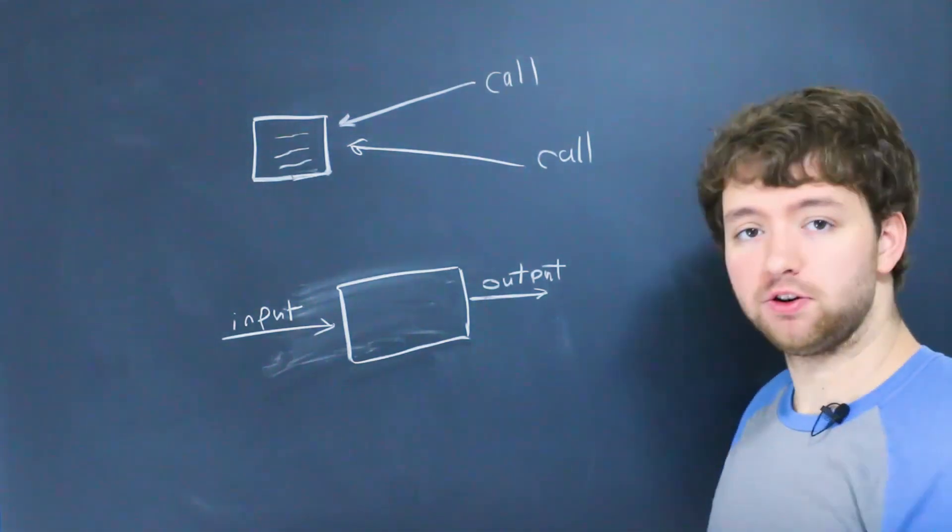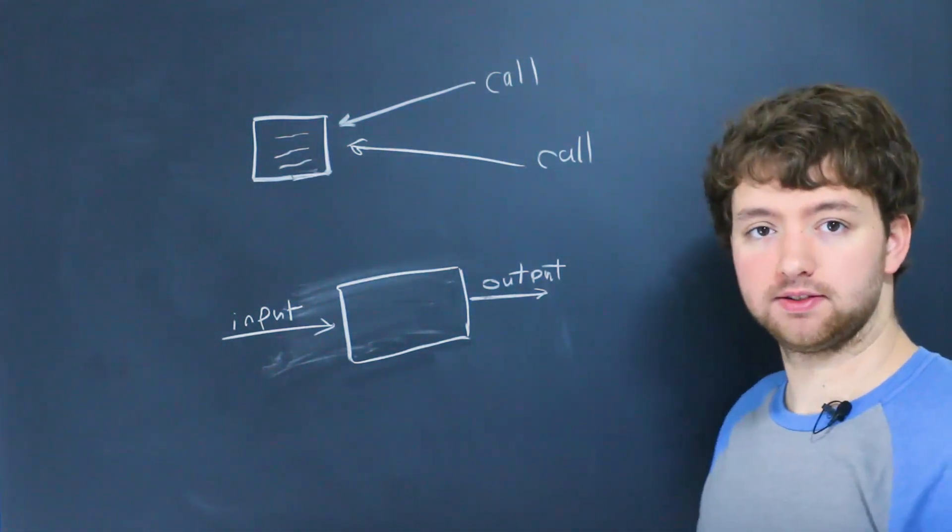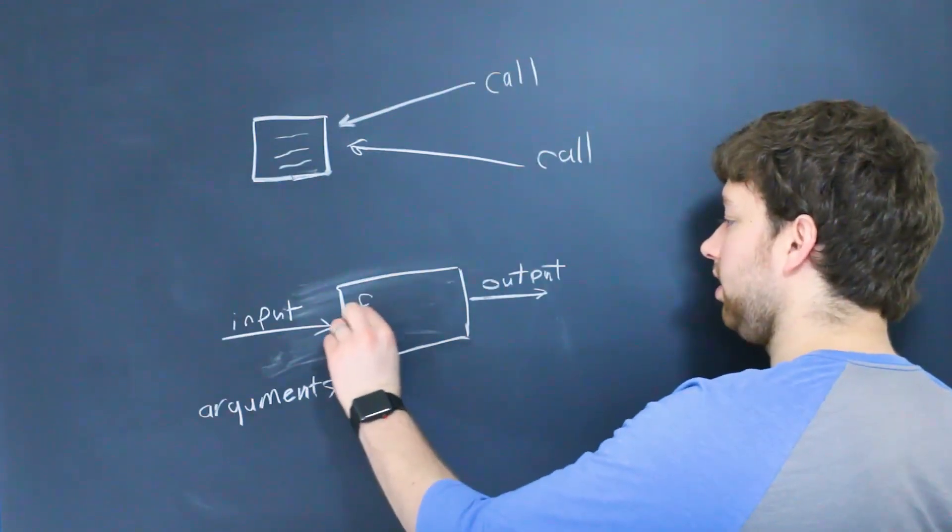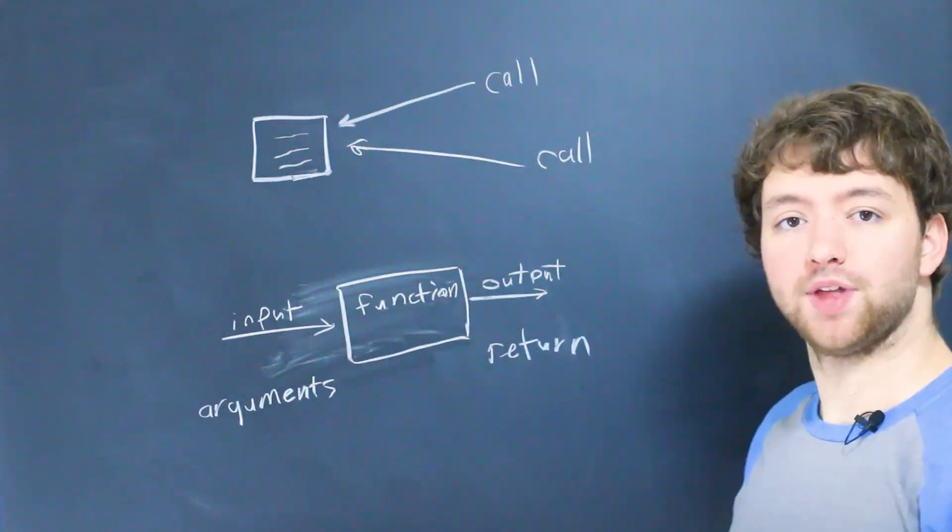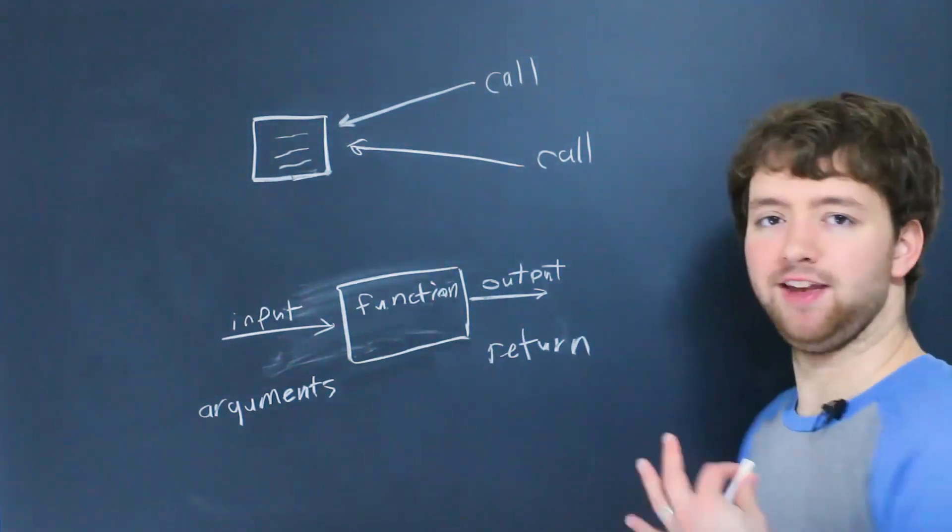Now the input, the stuff you pass into the function, is known as arguments. Then you have the function body. That's what it does, the code. And then we have the output, which is known as the return. So that is basically the concept of what a function is.